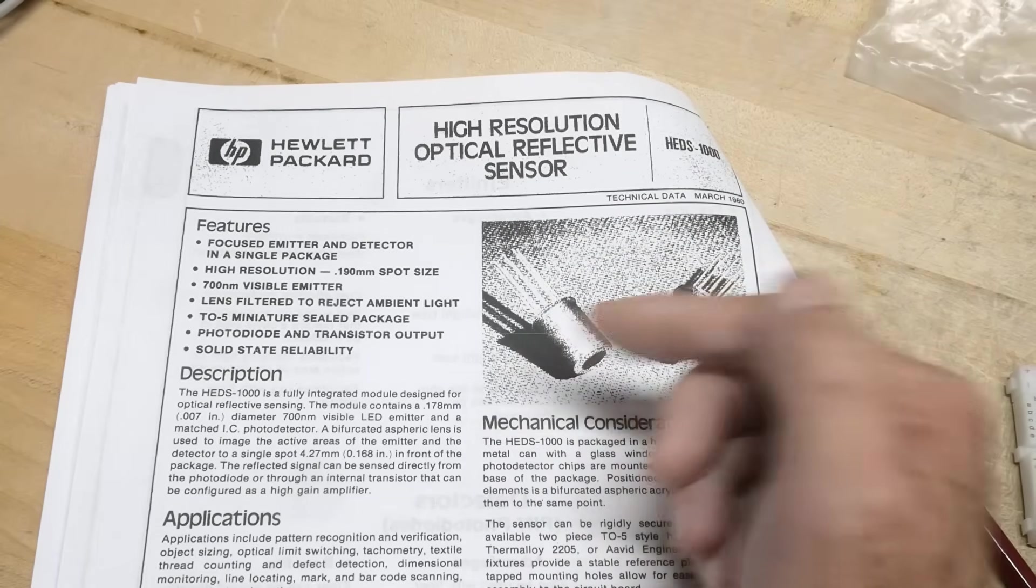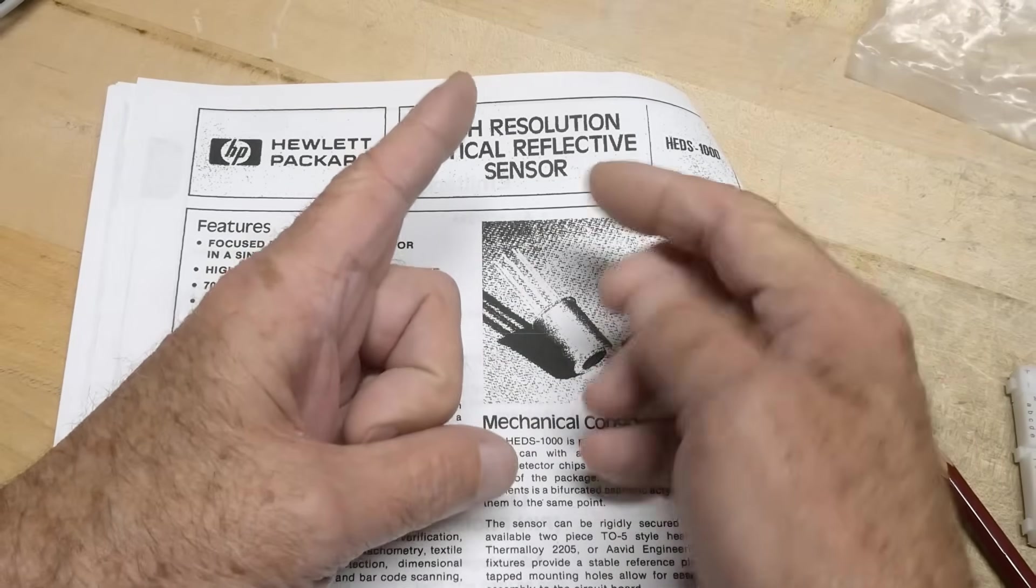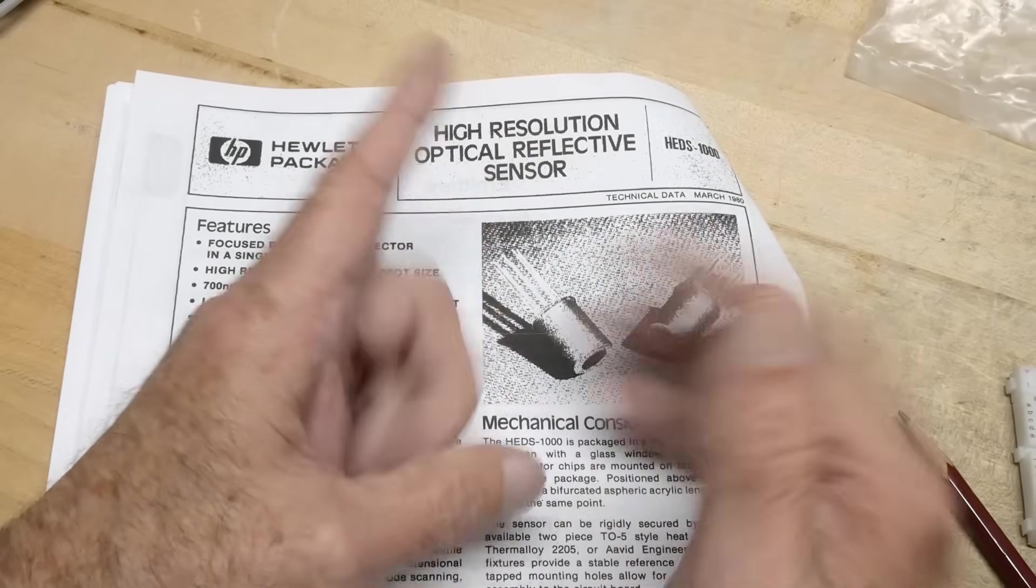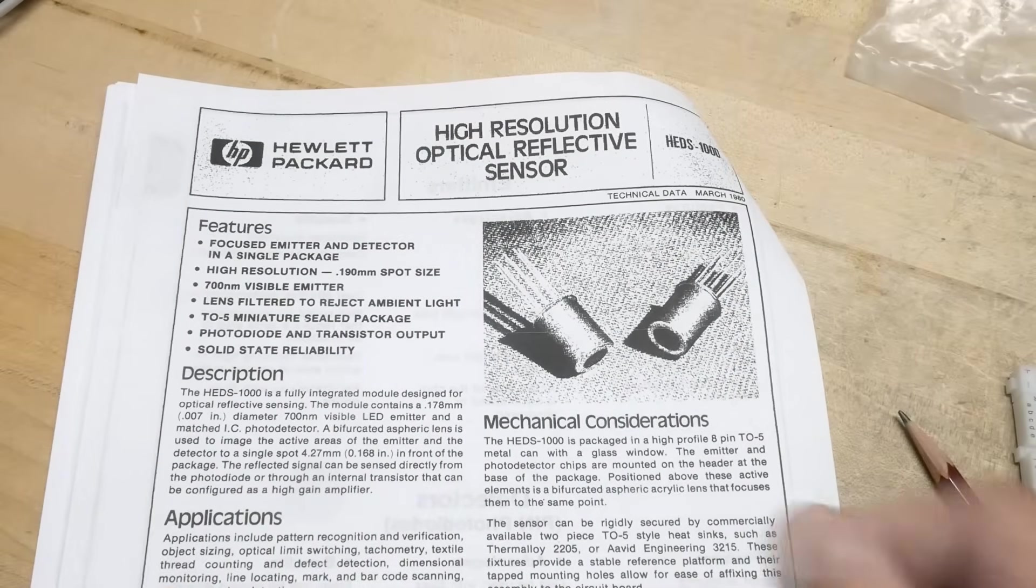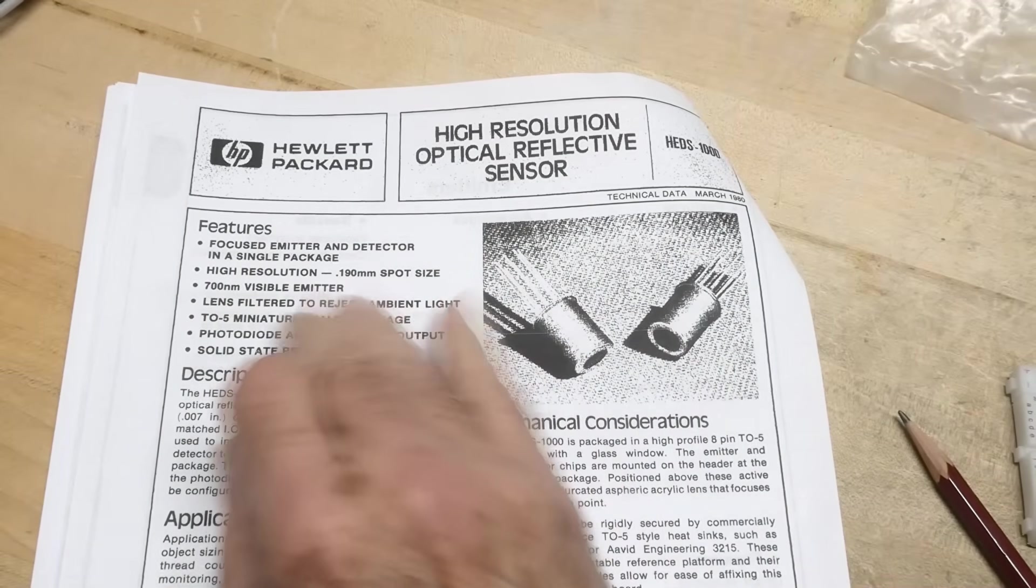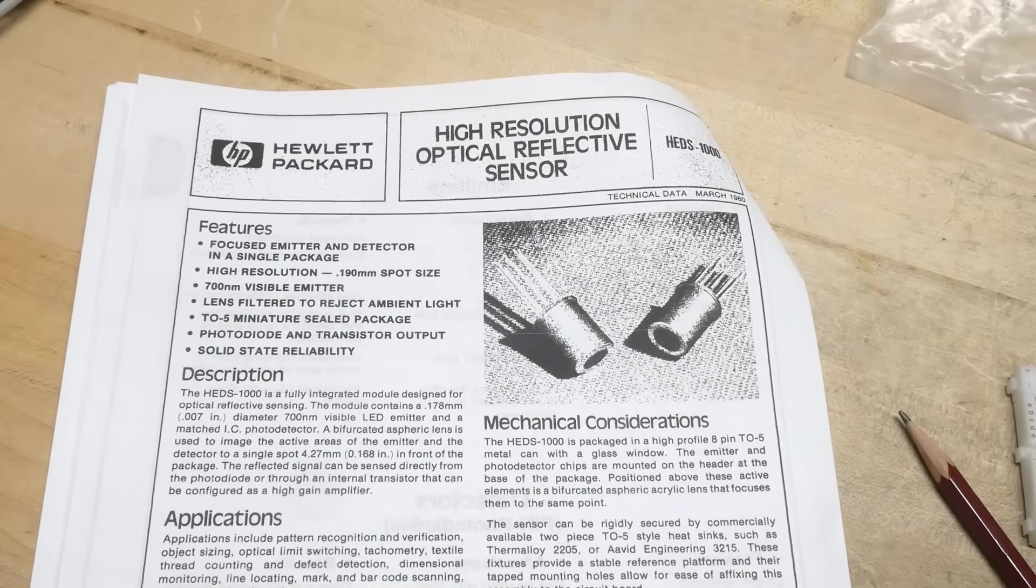It is a non-contact sensor that sends out light and then looks at the reflected light. We've seen those before, but this one does it in a fancy way. It uses 700 nanometers, although we can actually see that with the visible eye.